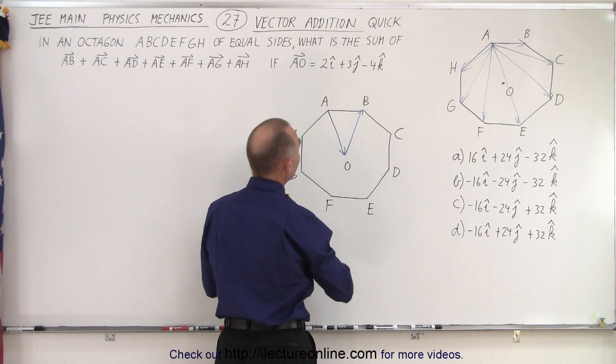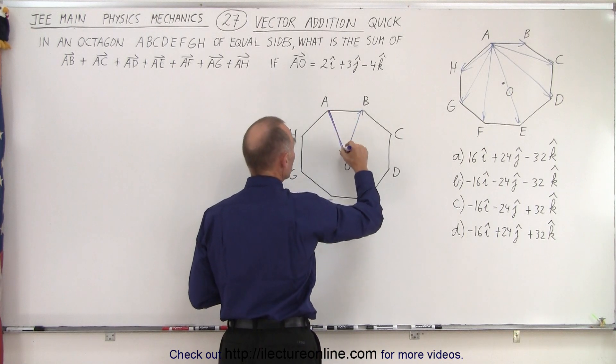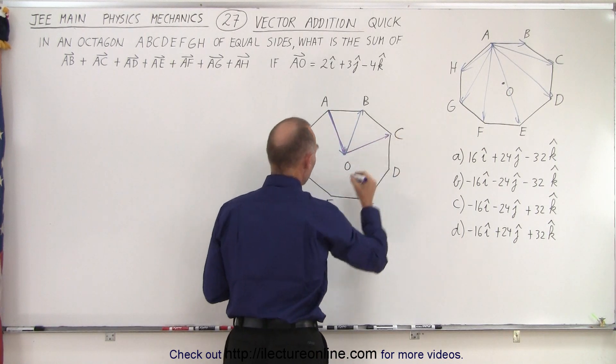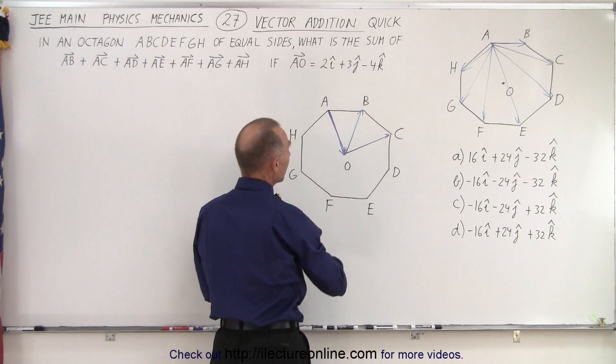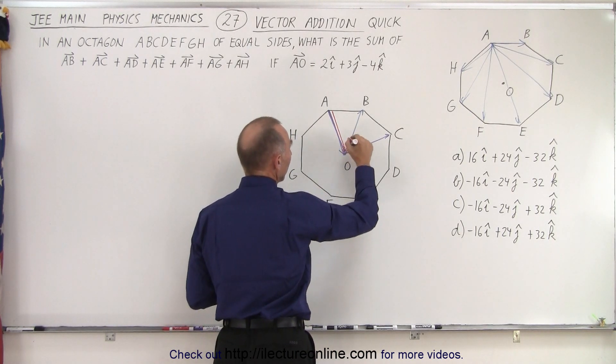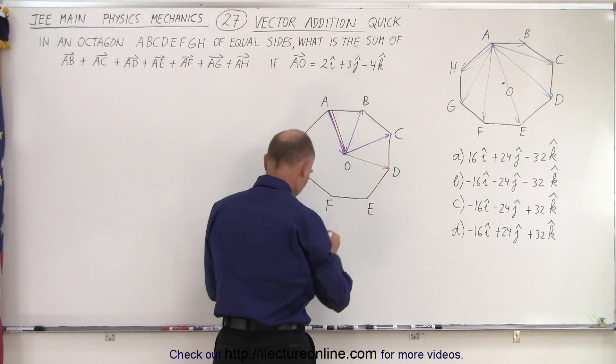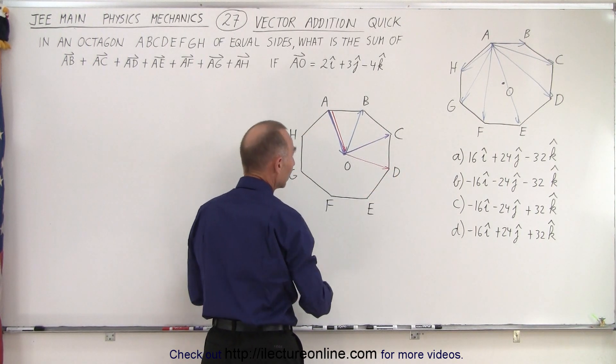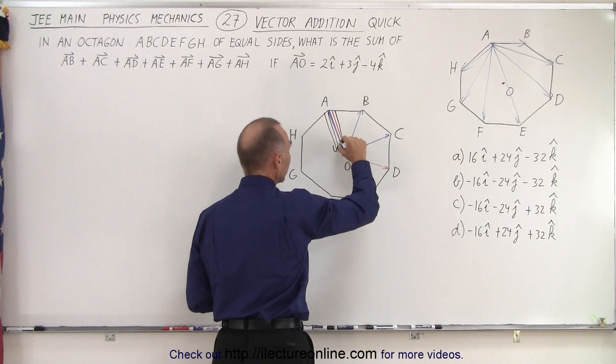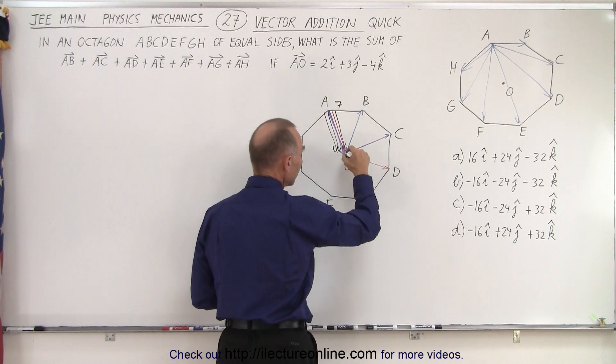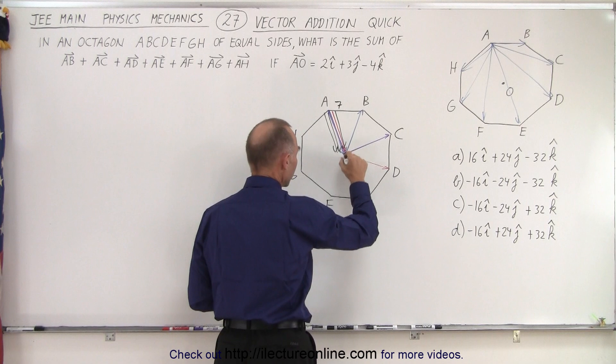And then from A to C is the same as from A to O and then O to C. And you can see that from A to D you get A to O and A to D. And if you continue that, notice that you end up with seven vectors in this direction. You have seven of them and you end up with all these vectors right here.